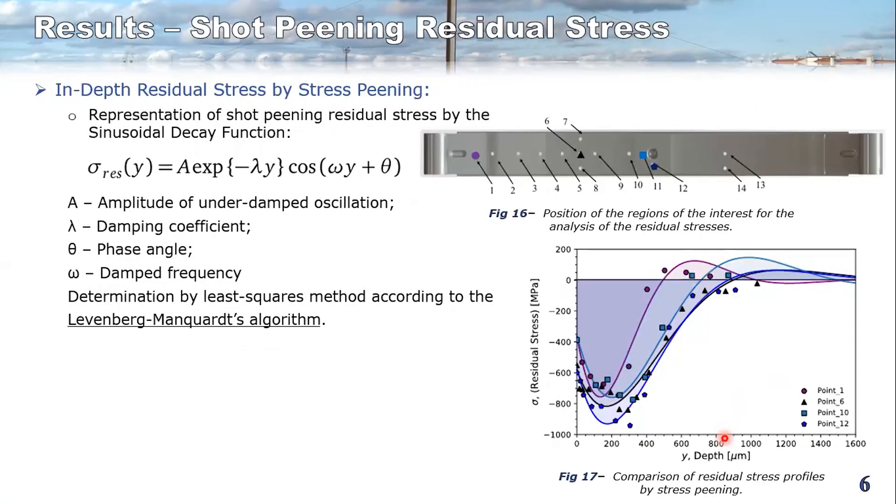And what about the shot peening process? You can see here we can analyze four points. We can see here the profile of the residual stresses for each point. This profile is made by regression of this function. This is a sinusoidal decay function where the parameters are determined by the least squares method according to the Levenberg-Marquardt's algorithm.